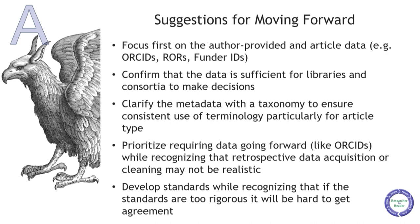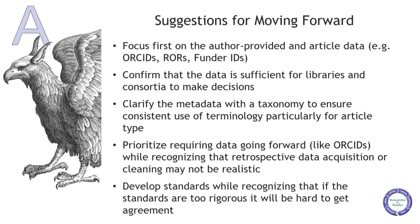There was a recommendation to clarify the metadata with a taxonomy to ensure consistent use of terminology, since one publisher and another may use slightly different terms — particularly true for things like article type, which is one of the fields in the data template. There was also a suggestion to prioritize having publishers require things like ORCID IDs, recognizing it would be difficult to acquire that data retrospectively. Standards are needed, but must be balanced against the risk that overly rigorous standards make agreement very hard.